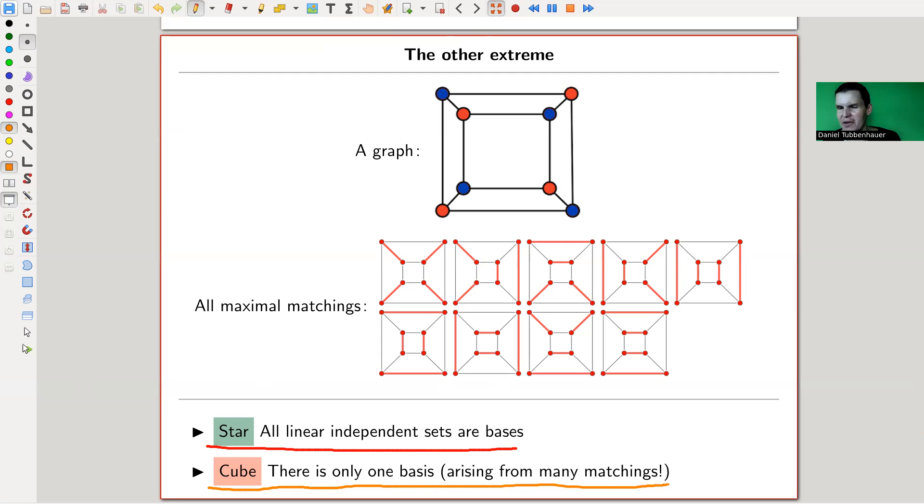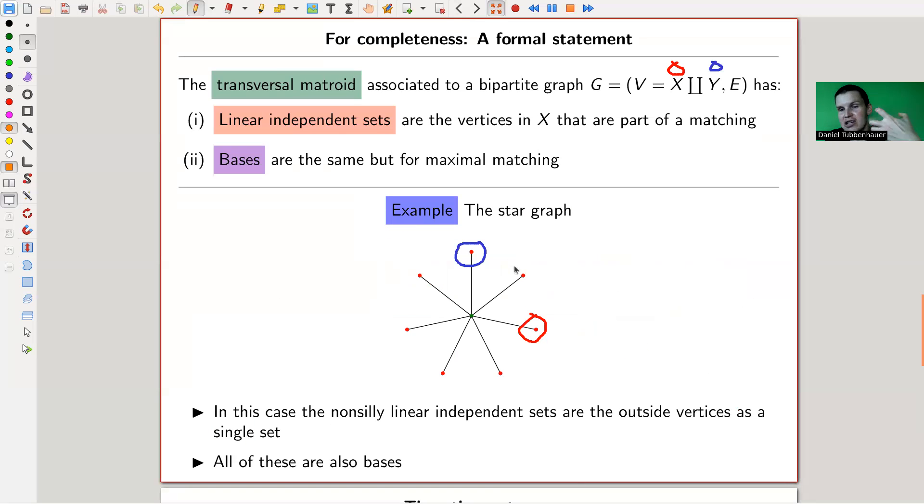There's only one basis and it arises for many matchings. So I also put this here because many matchings can give the same type of matroid, sorry, the type of linear independent set. So all of these, because I only consider the vertices and all vertices are included, give the same linear independent set. So it's more like we are studying vertices of matchings than matchings themselves. But that's a slight flaw in the story, which I'm trying to hide under the rug. No, I'm not trying to hide it. It's just what it is. And actually, the story is still fantastic.